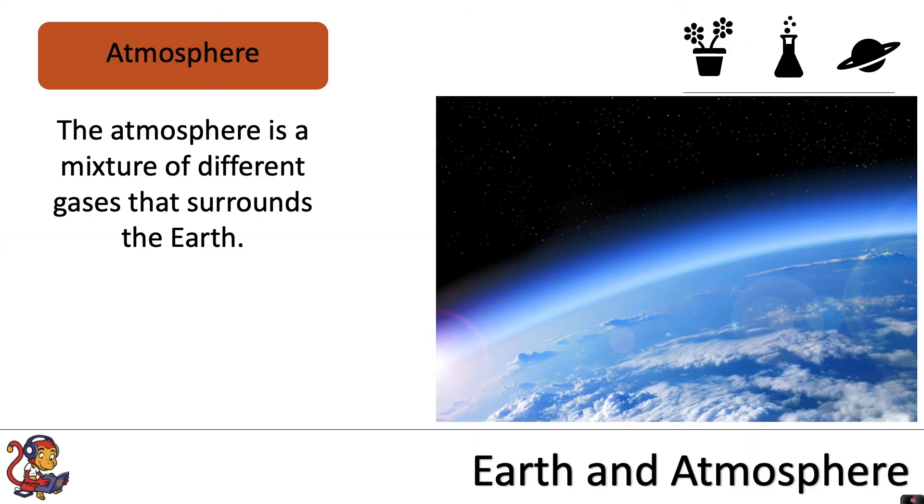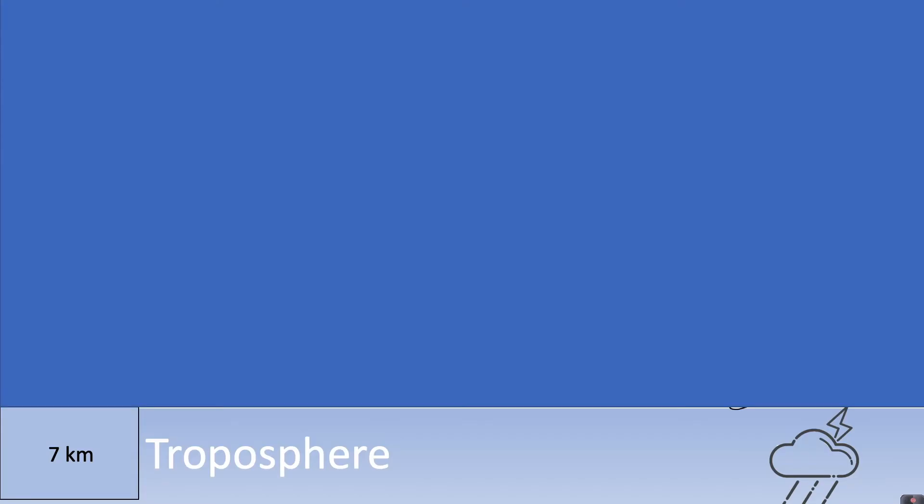Sitting above the Earth's crust is the atmosphere. And the atmosphere is a mixture of different gases that surround the Earth. The layer of the atmosphere closest to Earth is called the troposphere. And this is where most of the weather takes place.